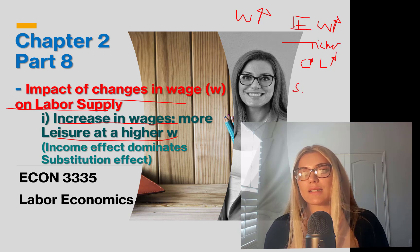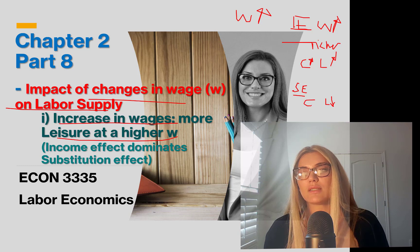The substitution effect says that wages went up, so now leisure is more expensive. You run away from leisure that is relatively more expensive — lower your leisure, increase your consumption. So if leisure goes up, hours of work go down. Here, leisure went down and hours of work went up.